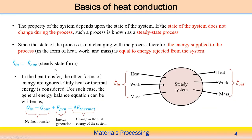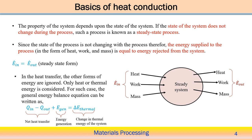Further exploring this energy system, the property of the system depends on the state of the system. If the state of the system does not change during the process, it is known as a steady-state process. It means if the state does not change with respect to time, it is steady state; otherwise, if there is a transient variation with respect to time, we say it is in the transient state.